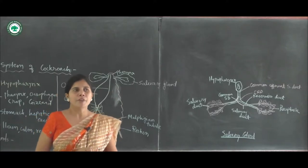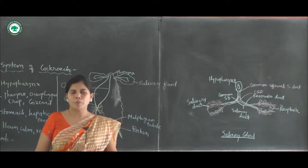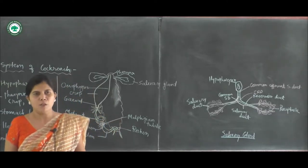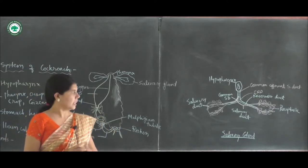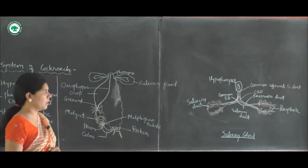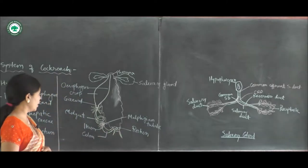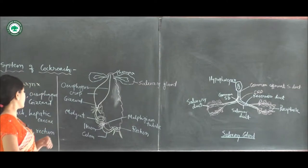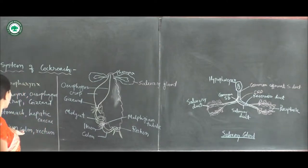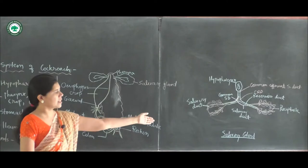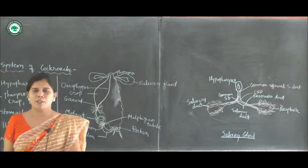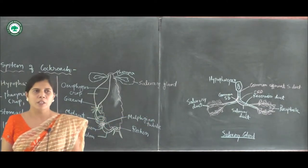Now moving to the last topic of the digestive system: food and digestion. The digestive system of the cockroach consists of an alimentary canal divided into three parts — foregut, midgut, and hindgut — along with the salivary glands.